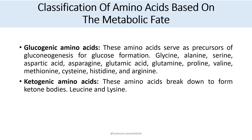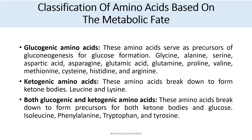Ketogenic amino acids break down to form ketone bodies — leucine and lysine are the two amino acids that break down to form ketone bodies. Glucogenic and ketogenic amino acids break down to form precursors for both ketone bodies and glucose: isoleucine, phenylalanine, tryptophan, and tyrosine act as precursors for both ketone bodies and glucose.